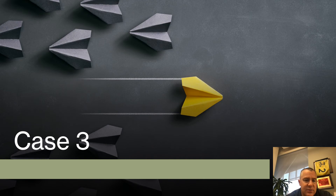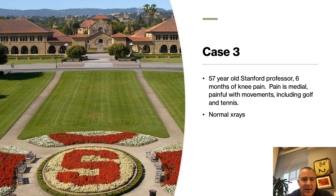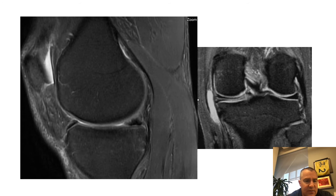Moving on to probably our most common case: a 57-year-old — we'll call him a Stanford professor — with about six months of knee pain. Pain is mostly medial, with pain during movements including golf and tennis, essentially those Thessaly-like movements. He has normal X-rays and comes in with degenerative tear signs. He's got a little bit of a complex tear where the medial meniscus doesn't look perfect, and on the coronal T2 we see that he's got a horizontal meniscus tear.